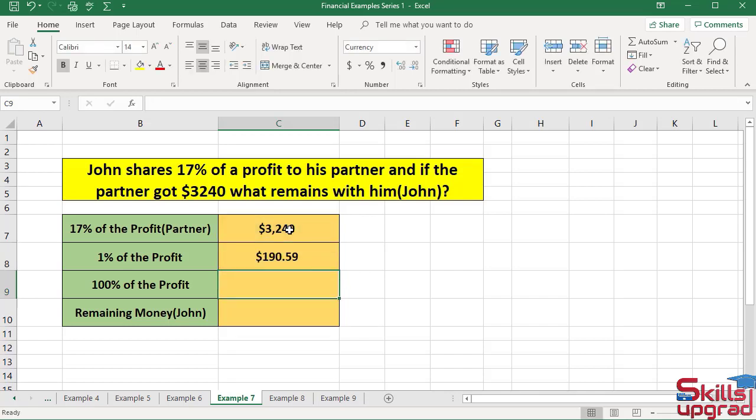Excel returns 1% of the profit: $190.59 from John's total profit.